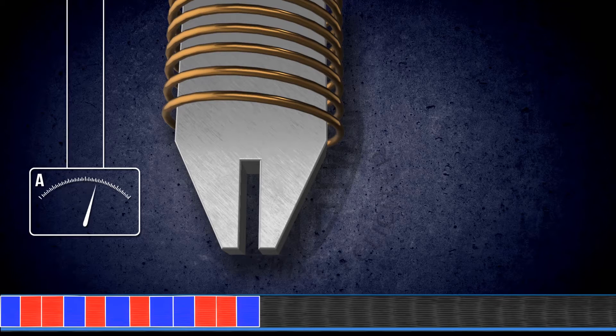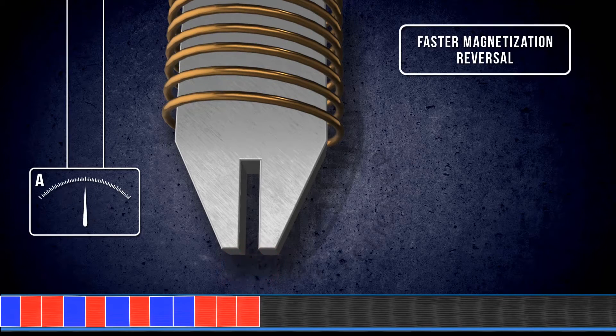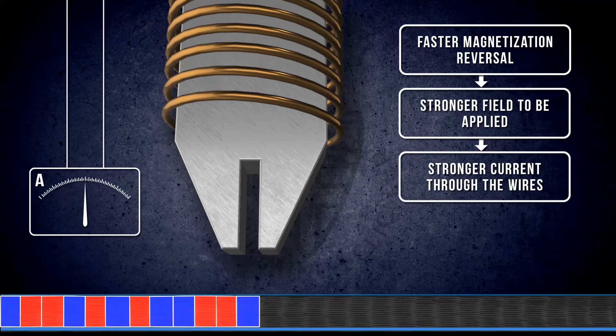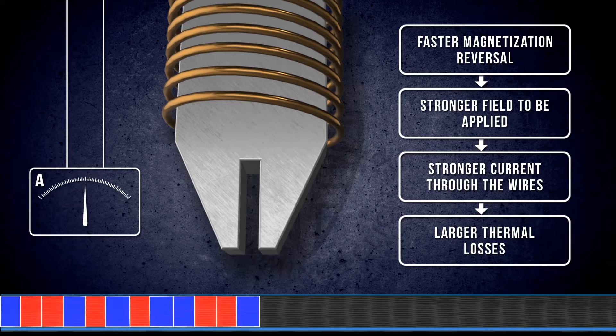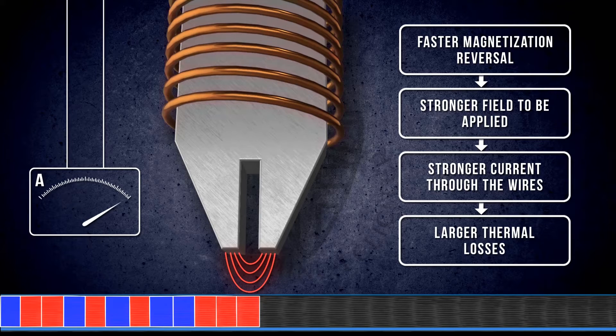For this, we normally apply an external magnetic field with the help of an electromagnet. The faster we want to reverse the magnetization, the stronger the field should be. The stronger the field is, the stronger the current which should run through the wires of the electromagnet. The stronger the current is, the larger the thermal losses in the wires are.